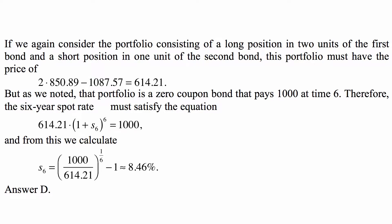And now if we again consider the portfolio consisting of a long position in two units of the first bond and the short position in one unit of the second bond, this portfolio must have the price of two times the price of the first bond minus the price of a second bond, and that's 614.21.